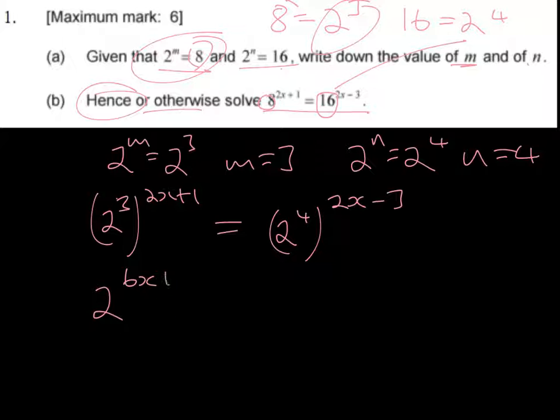Similarly here, using the laws of indices, multiplying 2 to the power 4 times brackets 2x minus 3 is going to give us 2 to the power 8x minus 12. Now we've got both sides of the equation with the same base.